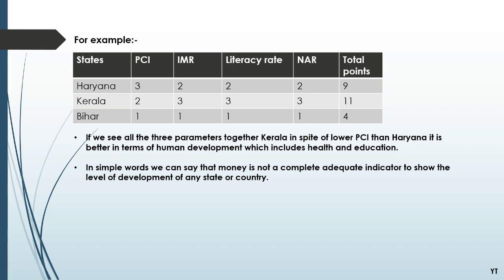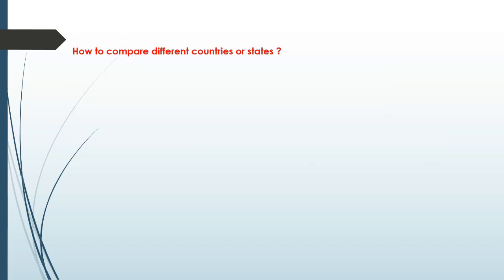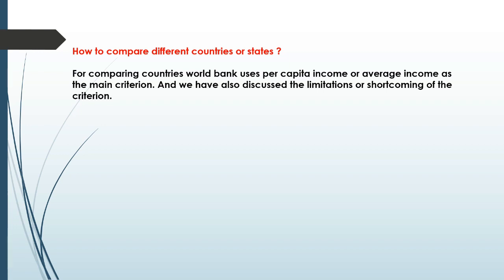After comparing different states based on per capita income and health and education, we come back to the topic of how to compare different countries. For comparing countries, the World Bank uses per capita income or average income as the main criterion, and we have also discussed the limitation or shortcoming of that criterion in detail.